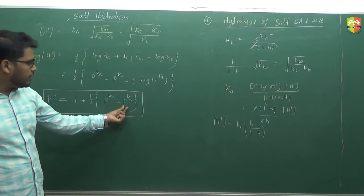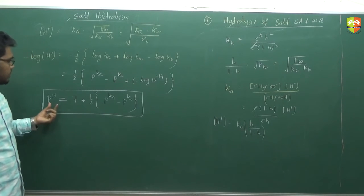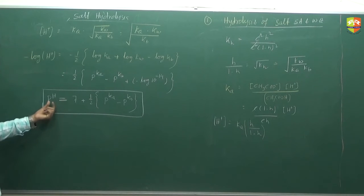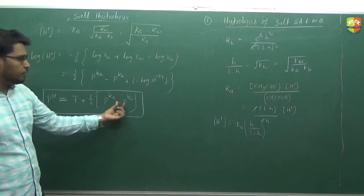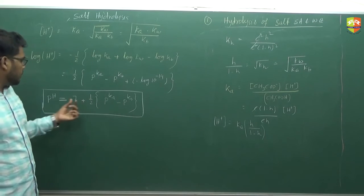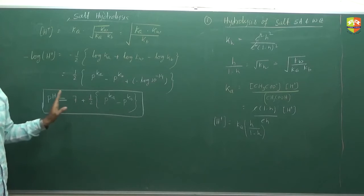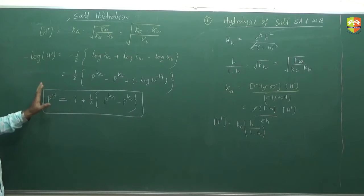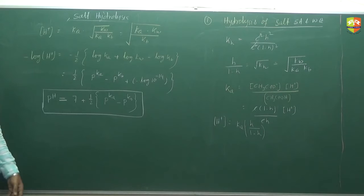If pKb is more than pKa, then pH is less than 7, meaning the solution is acidic. When pKa is more than pKb, pH is greater than 7, meaning the solution is basic. When they are equal, pH equals 7 and the solution is neutral. So when you have weak acid and weak base, it depends upon the relative strength of acid and base.